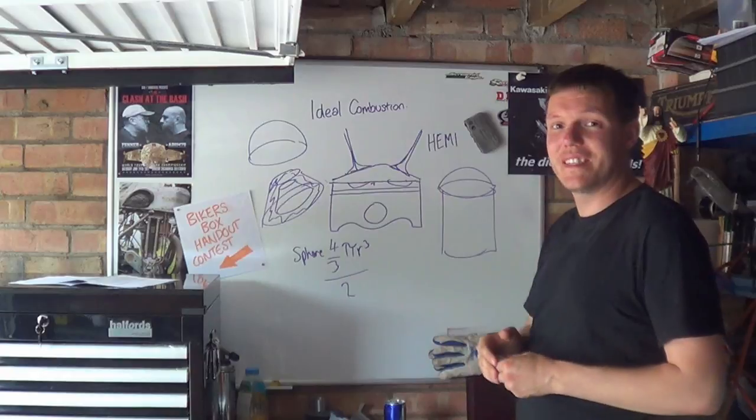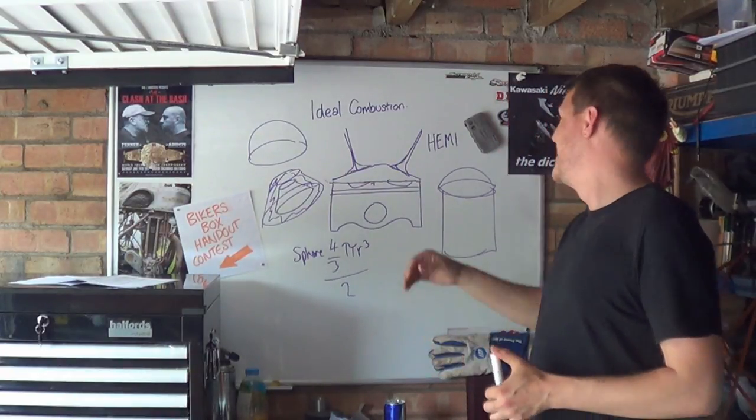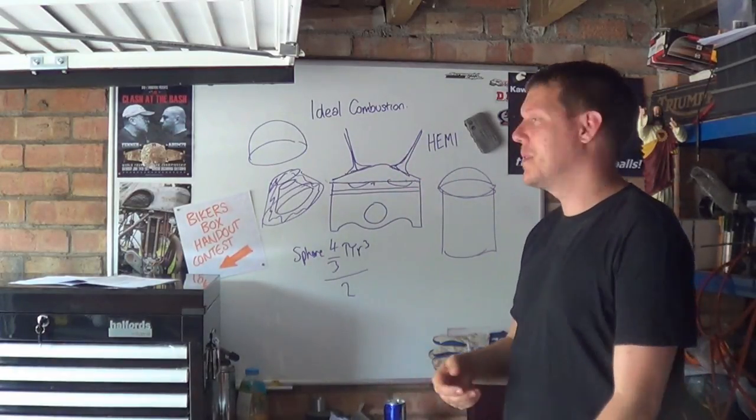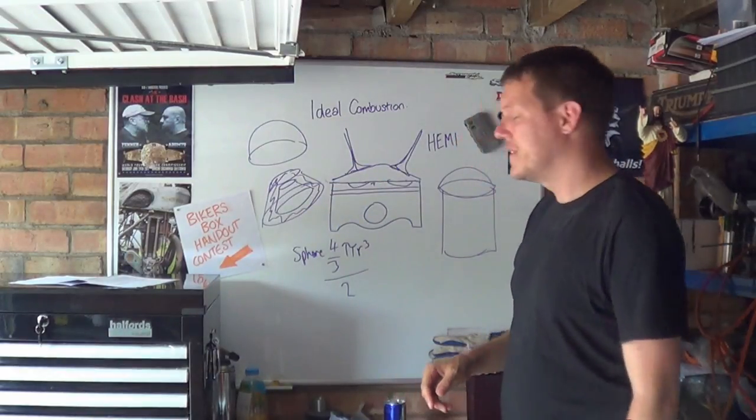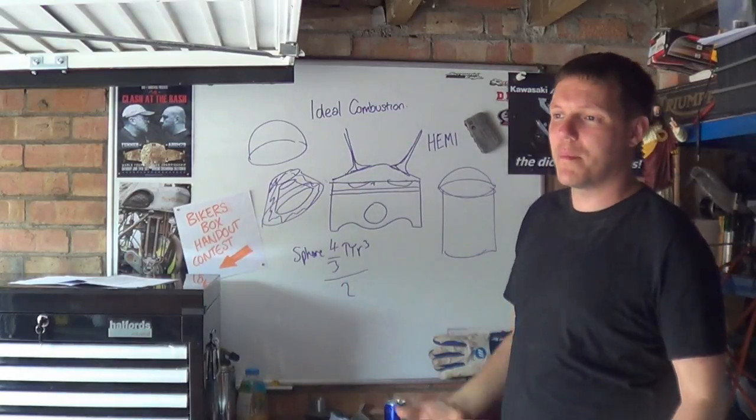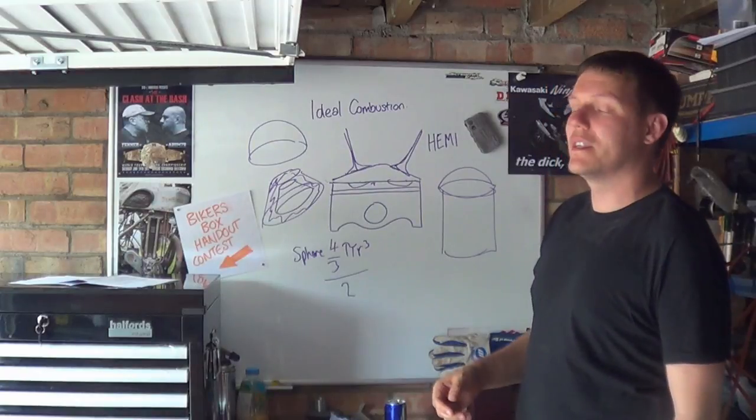That's why hemi heads and all the rest of it have pretty much been abandoned, apart from the Americans. They keep on rocking it because they think there's something special about it when there's not. It's just about basic volumes and geometries. When you start working out like this you go hang on, this is wrong somewhere and then you just end up with something like this. This is why pent roofs are the shape they are and this is why everyone else who's got half a brain cell is using them.